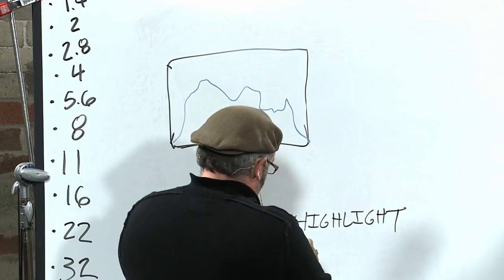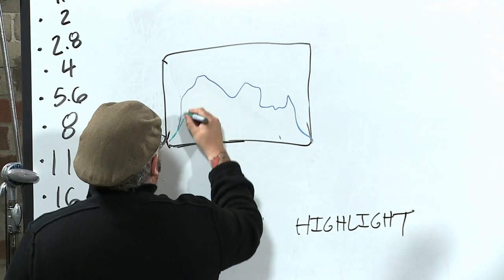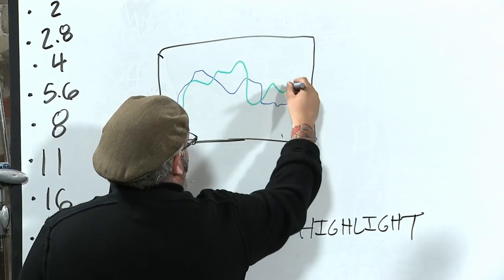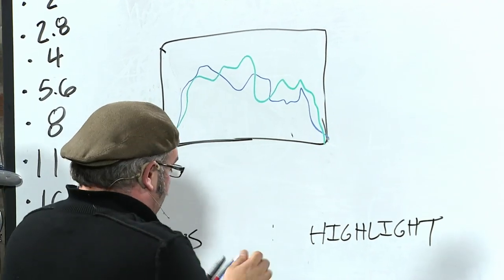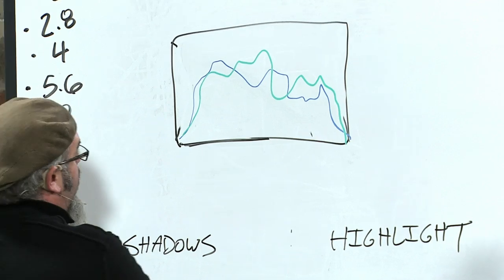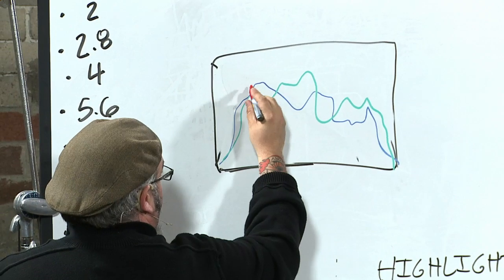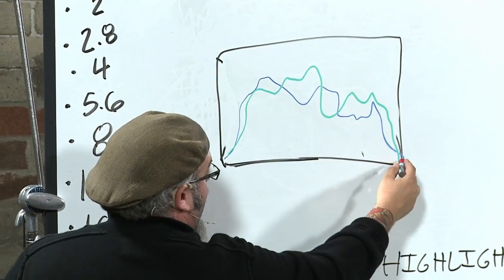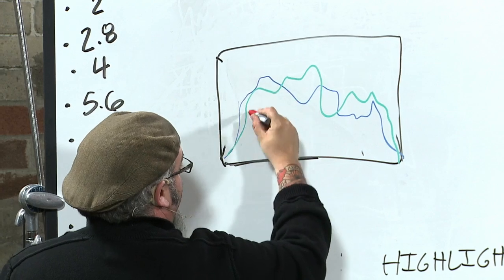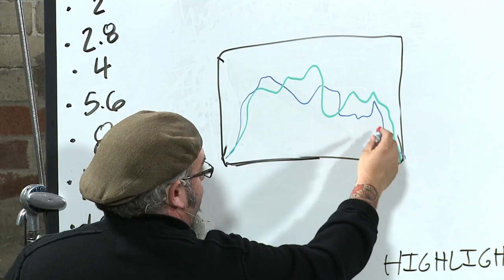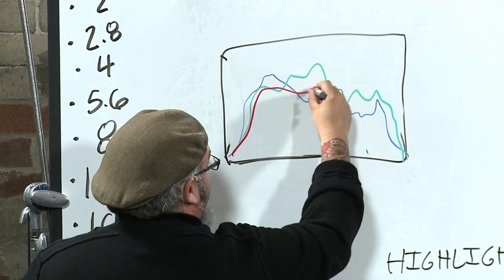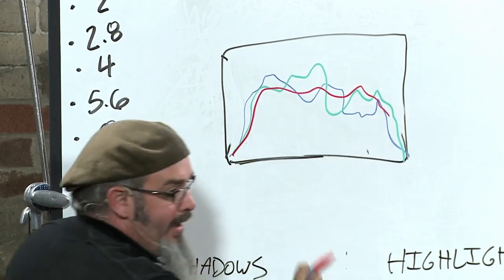And then my green comes in and does that. I want my red to come out of shadows and go back down into highlights in the same sort of fashion. But what happens sometimes, especially with Caucasian skin tone...